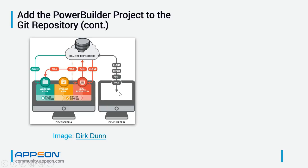Source code is moved between repositories by doing a commit to your local repository, then a push to the remote repository. The other developer can do a pull to get your changes and push their own. There can actually be several remote repositories — for example, offices on the East Coast and West Coast might each have a remote repository with a sync process between them. It's a distributed source control system with multiple repositories, all considered peers.